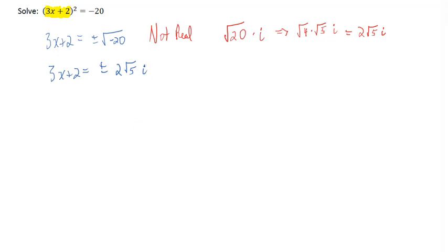And now we want to isolate the variable x. So let's subtract 2 from both sides. Now be careful.